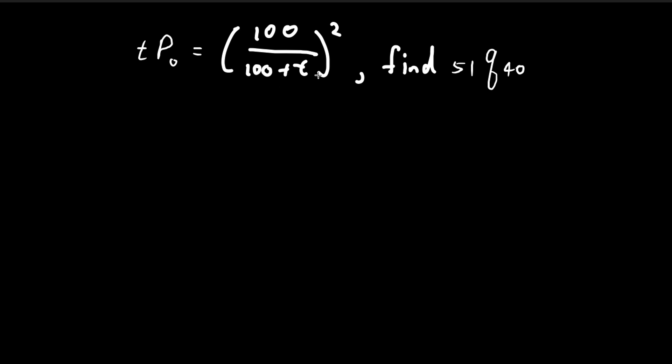Now let's apply our knowledge of actuarial notation to solve this problem. First, we're given the formula for tp0, which is given by this function over here, and we want to calculate 5 straight line q40.